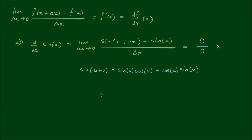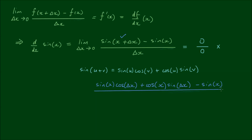Applying the sum-difference formula to the expression we're finding the limit for, the numerator becomes sine(x)·cosine(Δx) plus cosine(x)·sine(Δx), minus sine(x), all over Δx, and we maintain the limit at the front.